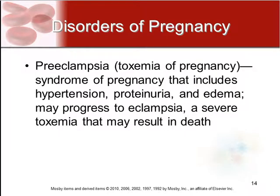Another serious disorder is preeclampsia, also known as toxemia of pregnancy. This is a syndrome of pregnancy that includes hypertension and proteinuria, which means protein in the urine.